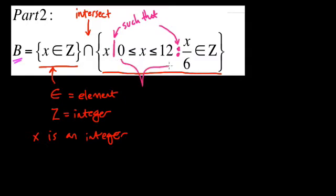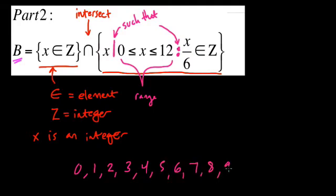Well, first of all, x has got to be larger than or equal to 0, but less than or equal to 12. So this kind of gives you the range of where x lives. So we also know it has to be an integer from the first part. These things have to be in common. So, so far, we're talking about the numbers 0, 1, 2, 3, 4, 5, 6, 7, 8, 9, 10, 11, and 12.